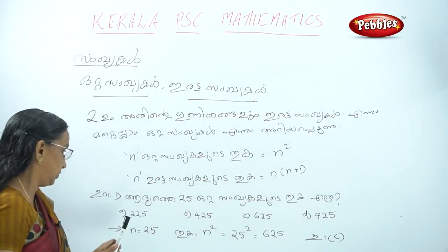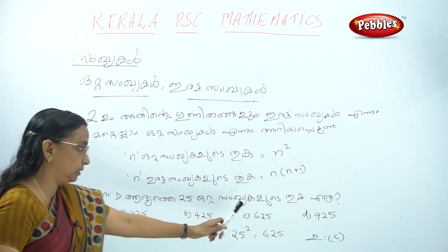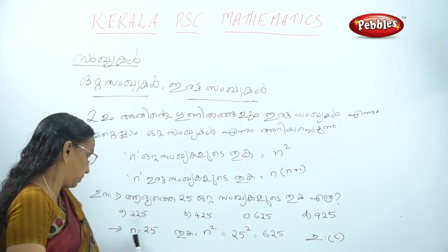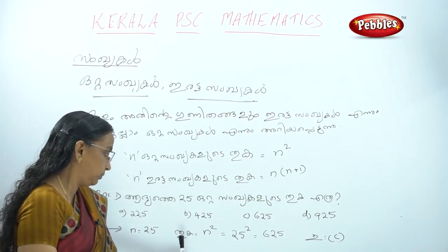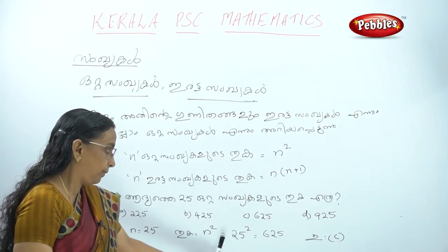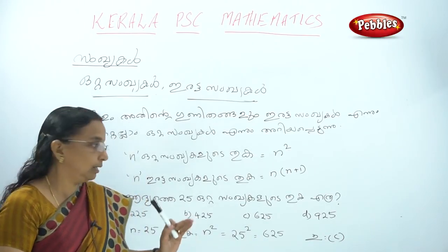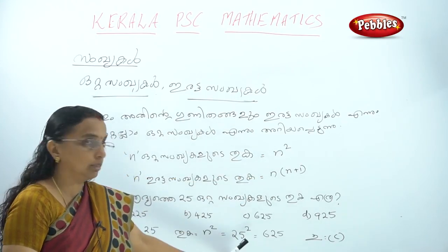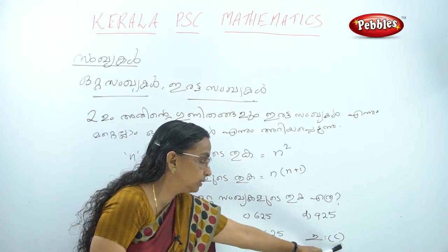We will solve the error. Then n is 25. Then what is n squared? 25 squared is 25. It is very easy to do the formula when we do this question. The answer is C.